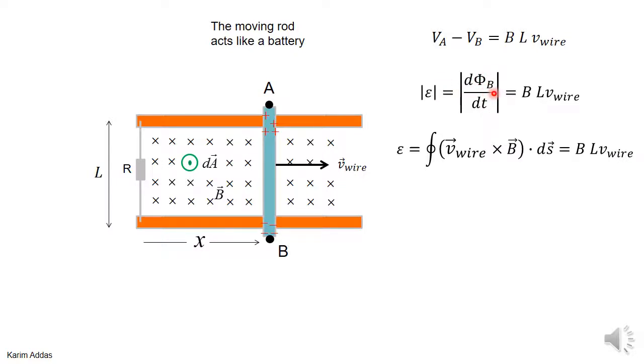And if you get the emf using this rule, integration of v wire across B dot ds around the closed loop, you also get BLV.